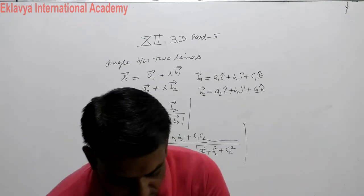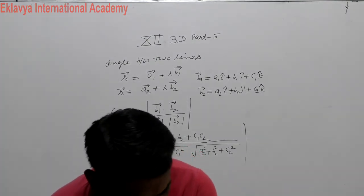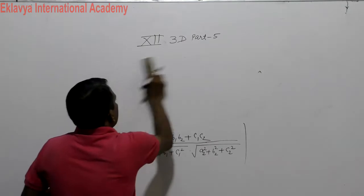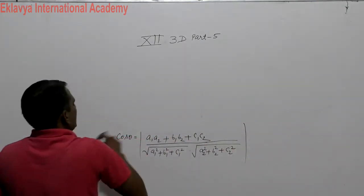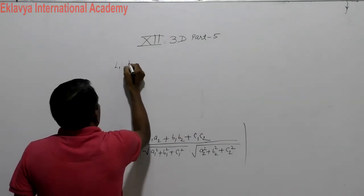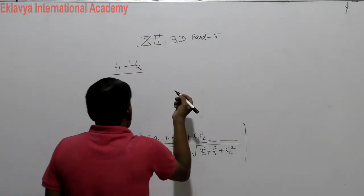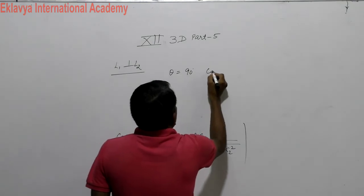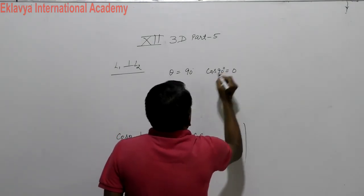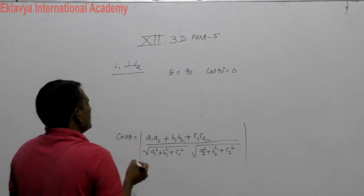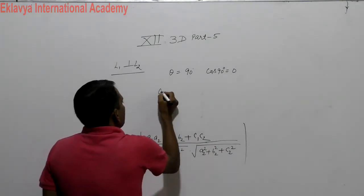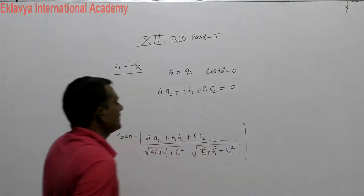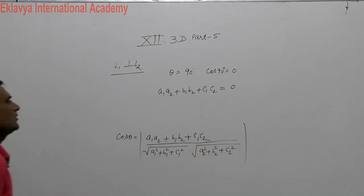If these two lines are perpendicular to each other, if lines L1 is perpendicular to L2, then the angle theta is 90 degrees. Cos 90 is 0. So from there we get the result: A1·A2 plus B1·B2 plus C1·C2 equals 0. This is the condition when lines are perpendicular.